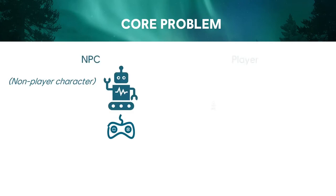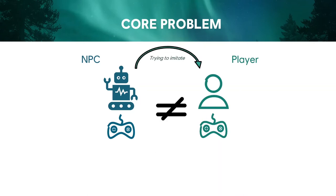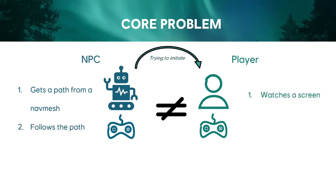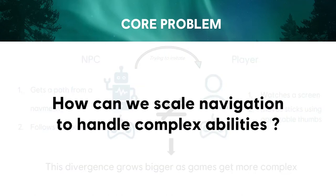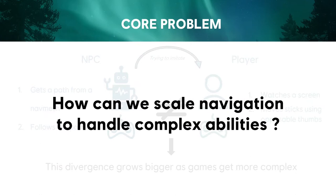Bringing this back to the core problem: there's a disconnect between the non-player character and the player — they're not created equally. The NPC gets a path from a nav mesh and follows it, whereas a player watches a screen and moves sticks on a gamepad using opposable thumbs. These are fundamentally different things, which means you won't be able to test your game using bots like a player would play it. As the games get more complex, this divergence grows. How can we actually scale navigation systems to handle these complex abilities?